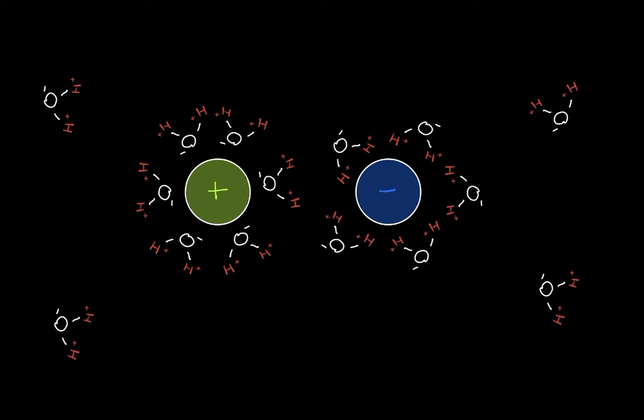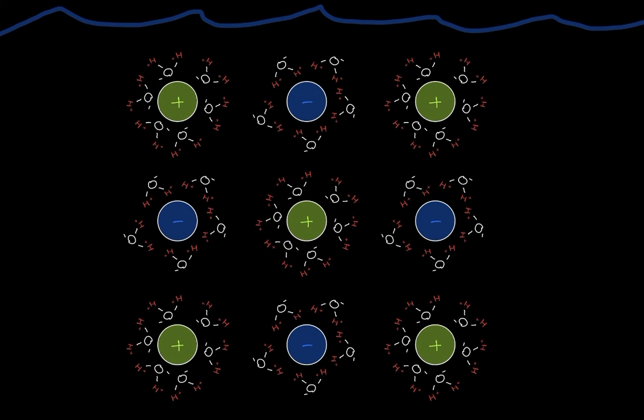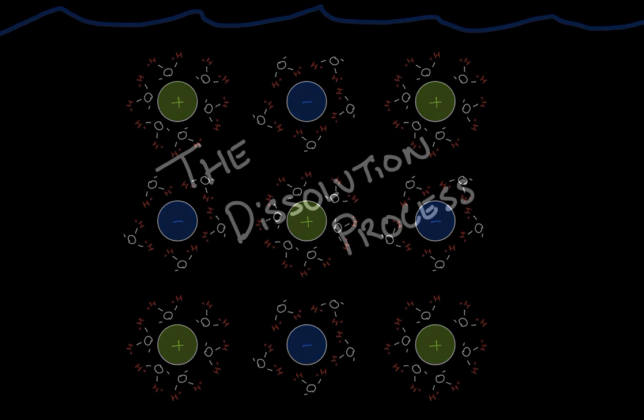And so when a salt goes into water, we see it start to break up and dissolve, and this is the process that is happening. These water molecules are electrostatically attracted to these ions, and so they begin to wedge themselves between them and pull them apart until they're all separated and surrounded in a sphere of hydration. And when that occurs, that is when we can no longer see the salt in the solution, and it is considered a dissolved salt. And so this is the whole dissolution process.